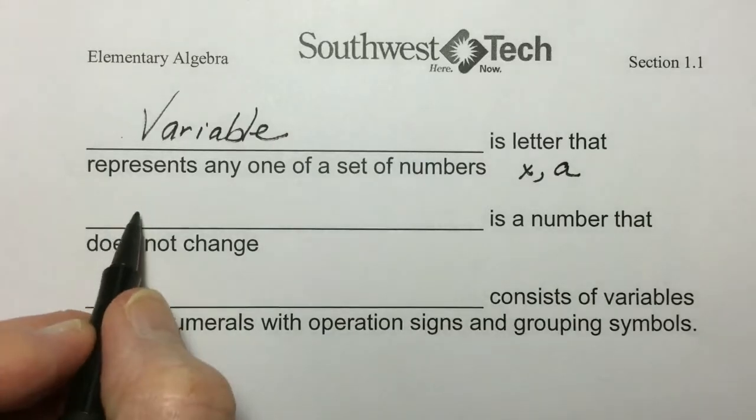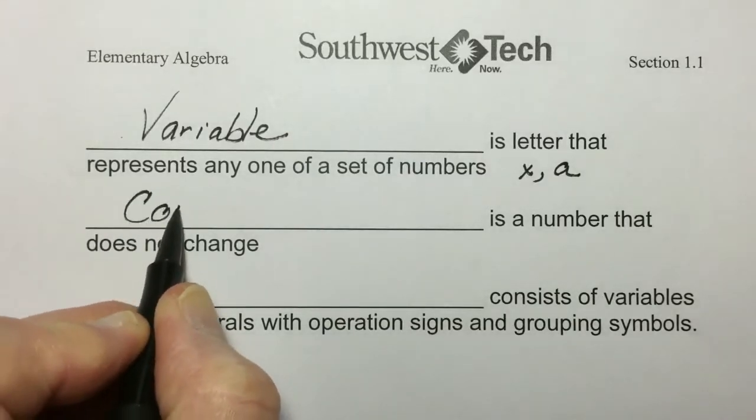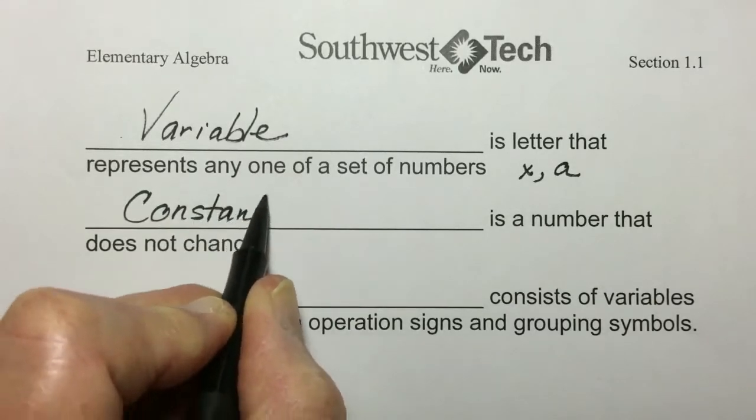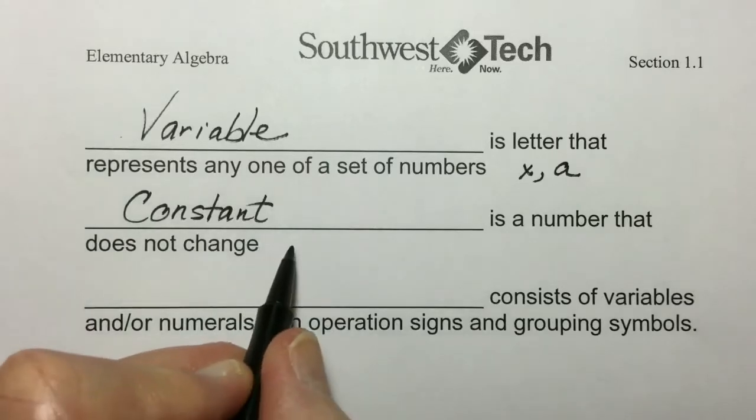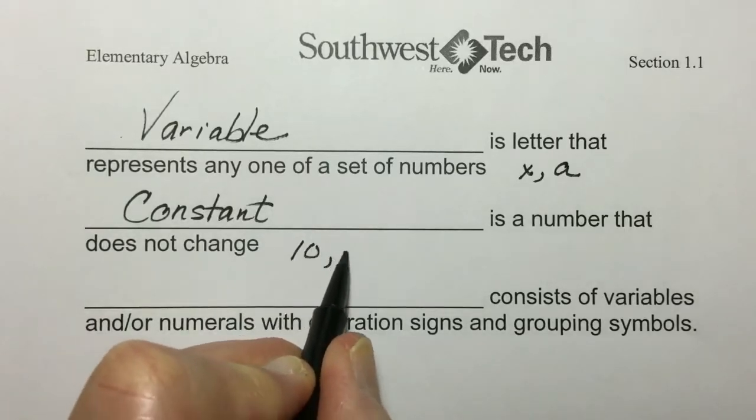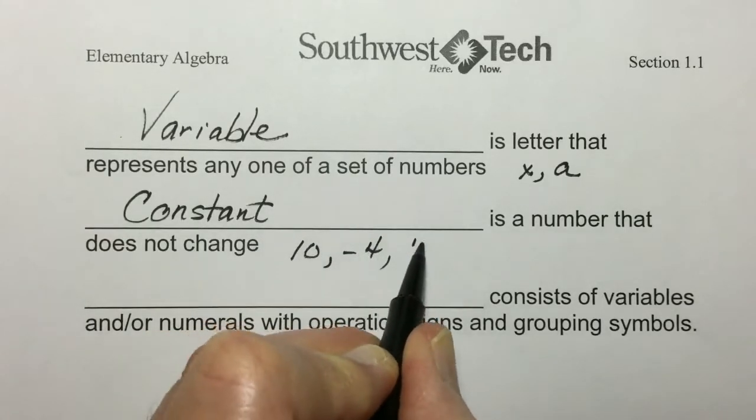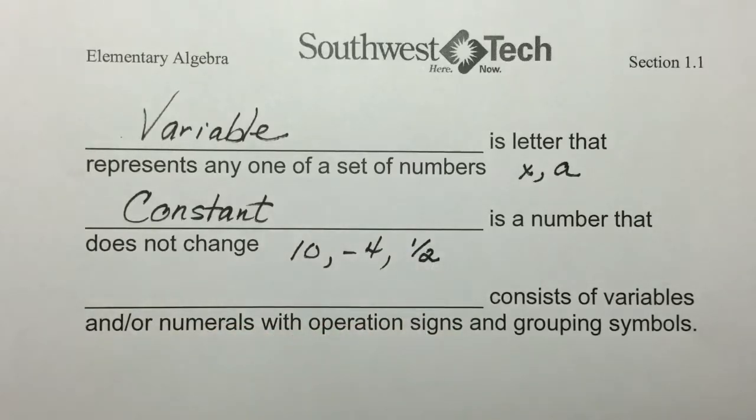A constant is a number that does not change. Some examples: 10, negative 4, and certainly it could be any rational number as well.